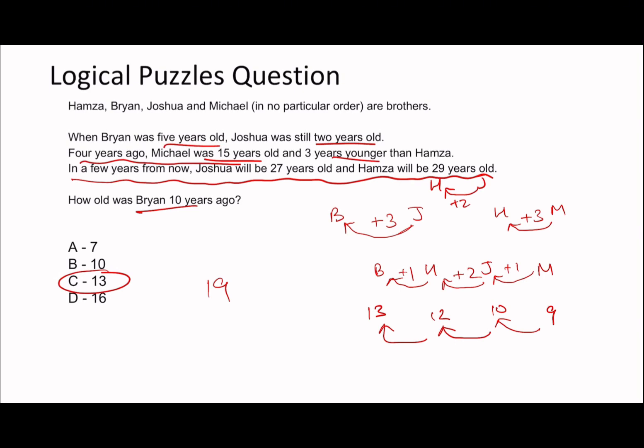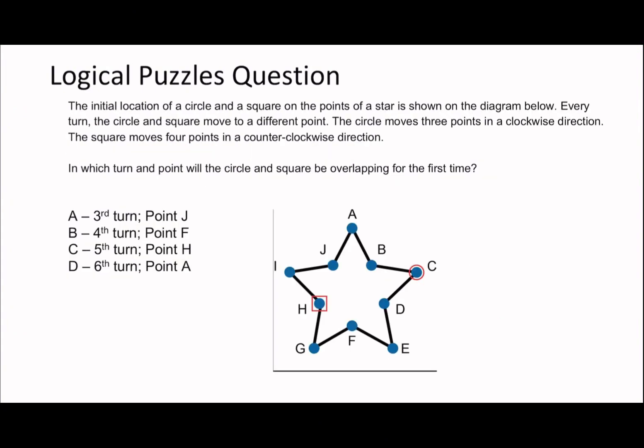Experience is a big thing that comes with these questions. Now, on to the next question — this is a proper mean one and I think people hate these, but there is a way of doing them and we can definitely make it a lot simpler. These are the ones with a bunch of shapes, asking in which turn and point will the circle and square be overlapping for the first time.